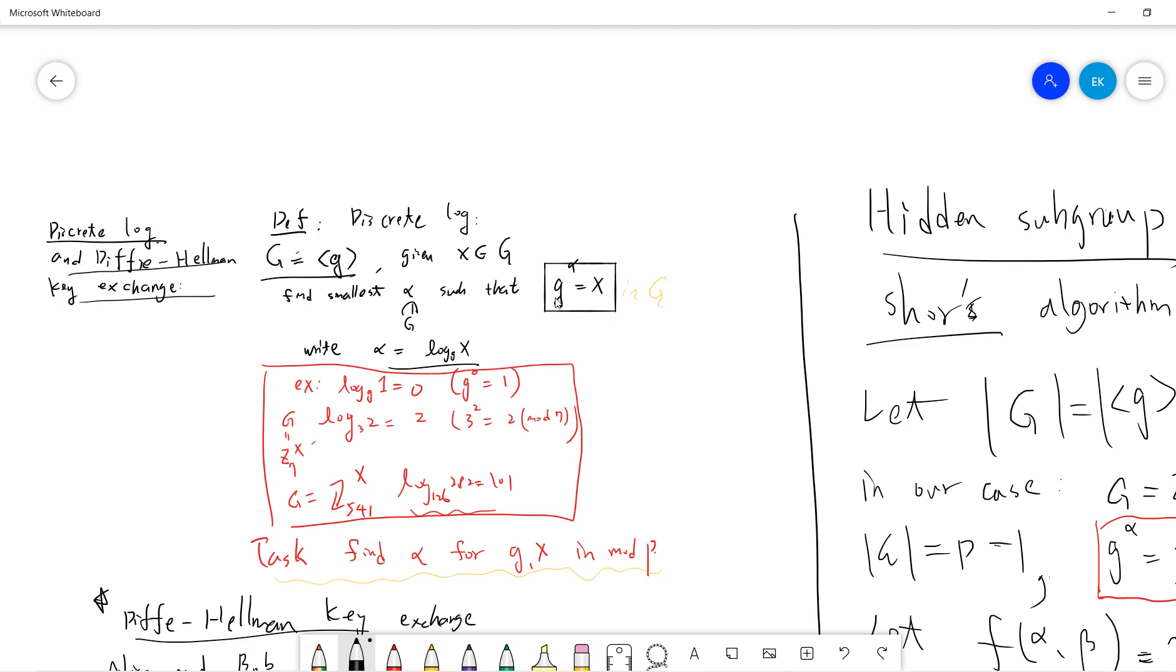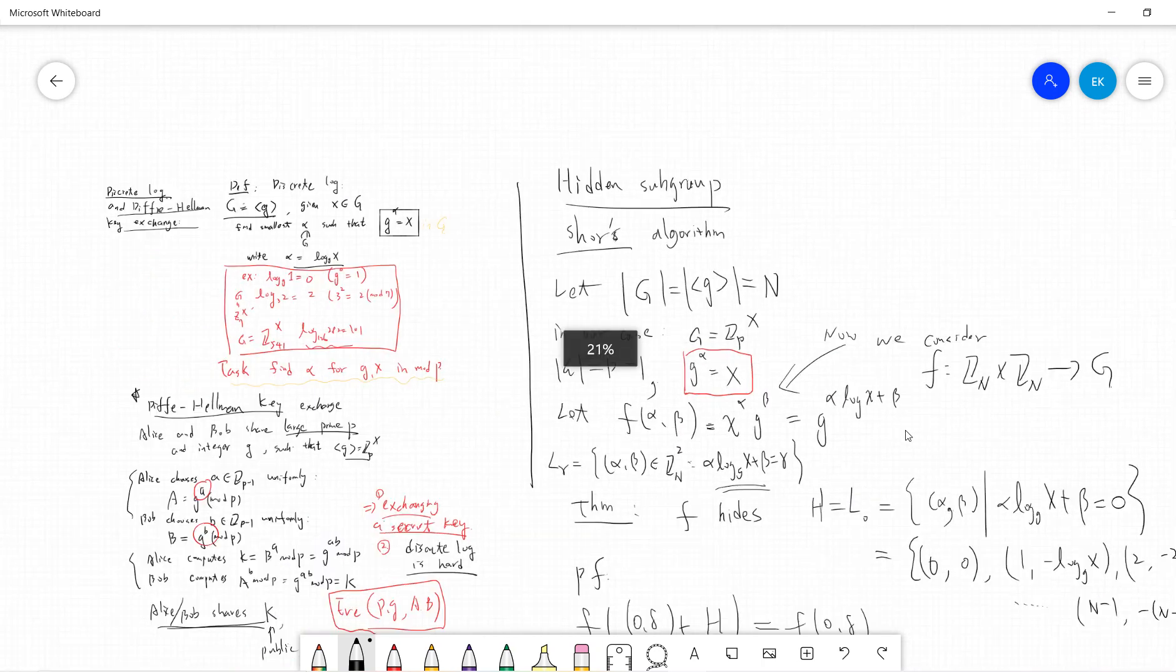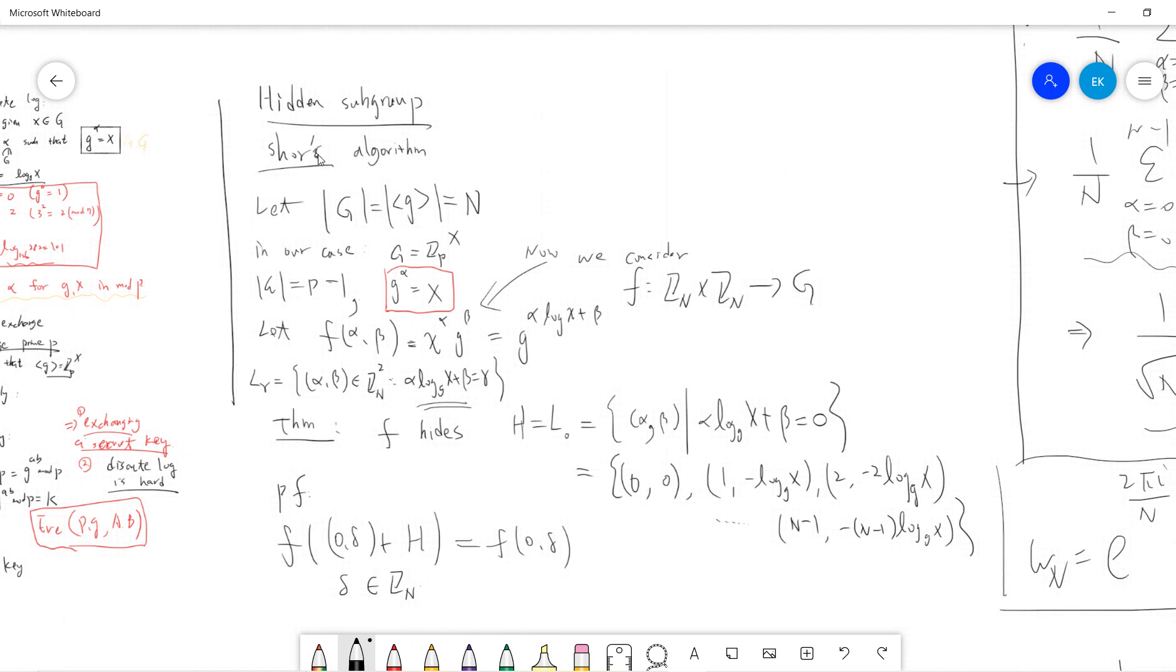Finding alpha is a difficult thing because naively the only thing you can do is keep multiplying g and guess which n it is, but this is usually difficult in a large prime number. So let's see how to do this. The Shor's algorithm generalizes to this hidden subgroup problem.